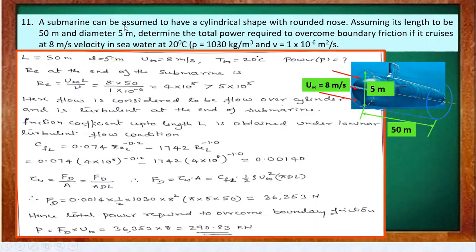The last problem involves a submarine assumed to have a cylindrical shape with a rounded nose. Its length is 50 m and diameter is 5 m. It cruises at 8 m/s in seawater at 20°C. Determine the total power to overcome boundary friction. Note: here the water is stagnant and the submarine moves at 8 m/s — the reverse of previous cases.